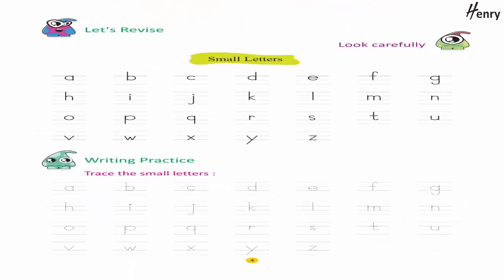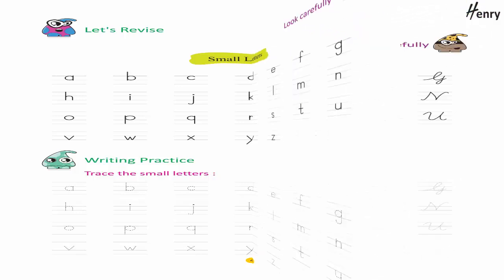Let's revise. Look carefully, small letters: A B C D E F G H I J K L M N O P Q R S T U V W X Y Z. Writing practice: trace the small letters.